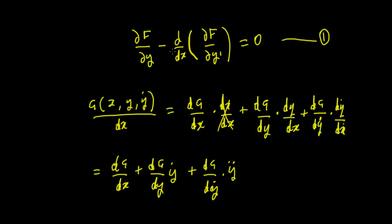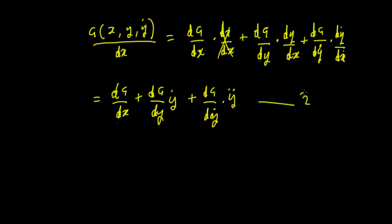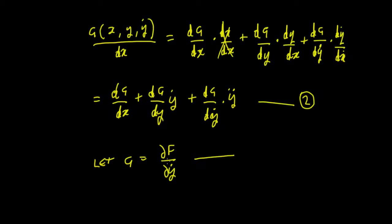Now we want to find the Euler-Lagrange term in terms of that total derivative. So we're looking for d/dx of our function — specifically, this function here is what we'd call g in our equation. What we want to do is let g equal partial f upon partial y'. We'll call that equation number 2, and we want to substitute that into equation 2.